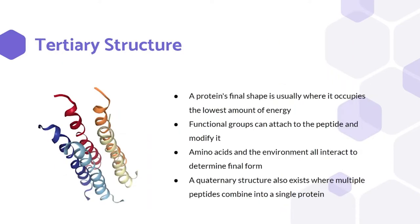A more final 3D structure starts to form in the tertiary structure level of organization. Here, a protein will typically occupy the space where it has the lowest amount of energy. Functional groups can attach to this structure and chemically alter it. One example of these groups would be alcohol.